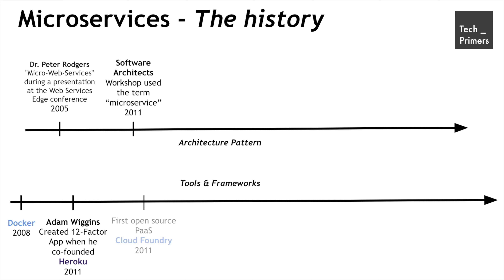In the same year, there was a competing product called Cloud Foundry, which was the first open-source platform-as-a-service, introduced in competition with Heroku. Both these platforms were platform-as-a-service where you can deploy an application or a web service and let the platform manage the infrastructure under the hood.